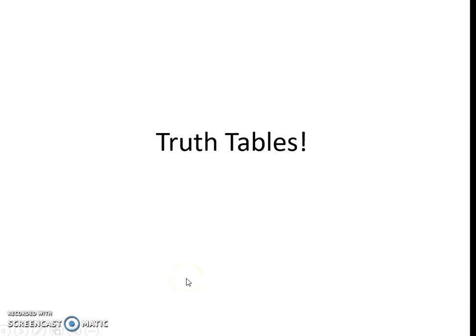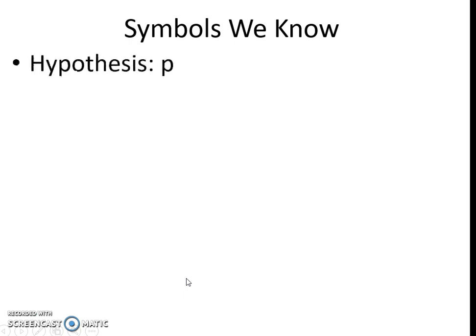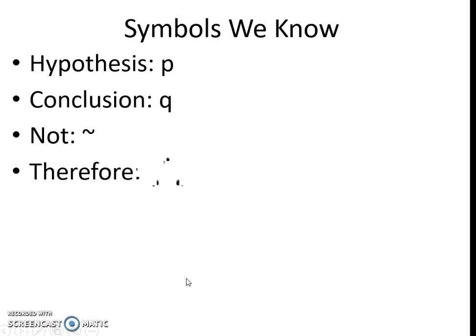Hi everyone, we're going to learn about truth tables. There are some symbols that we know. Hypothesis is P — please write down the symbol. Conclusion is Q. NOT is this curve. Therefore, our three dots looks like a triangle. If and then is an arrow pointing to the right.